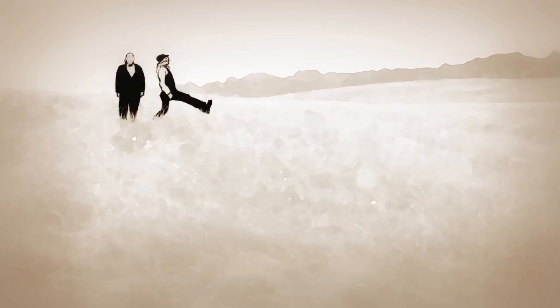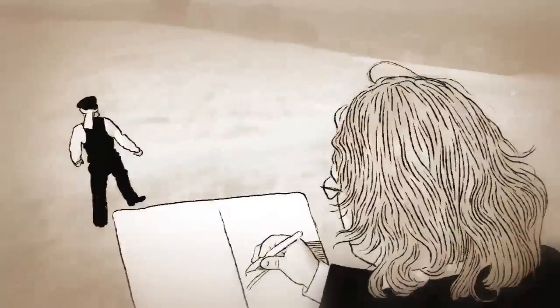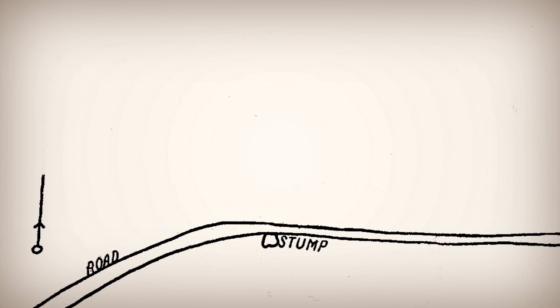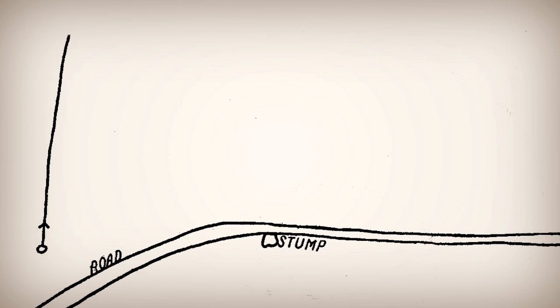So the man headed off, and here is Asa's map of what happened next. The man starts to walk, and his route, as you see here, begins to tilt ever so slightly to the right.